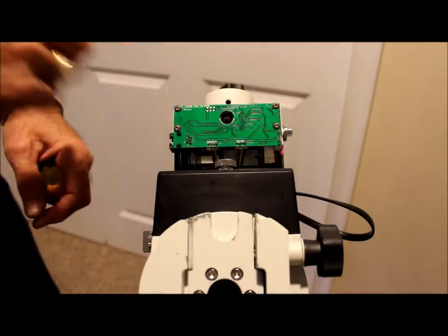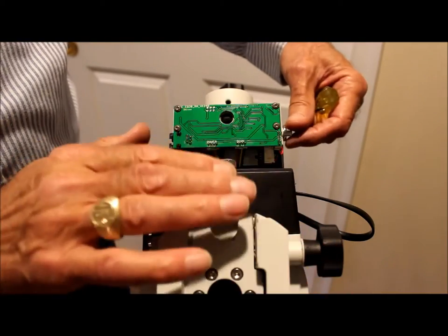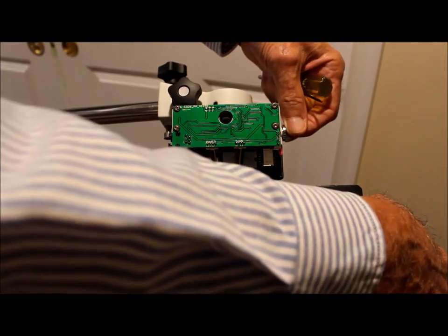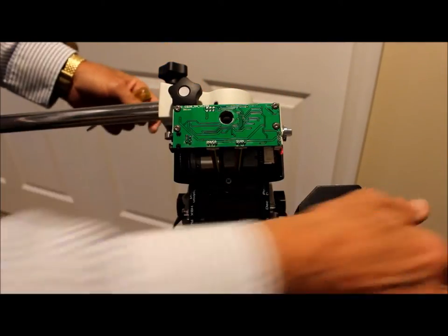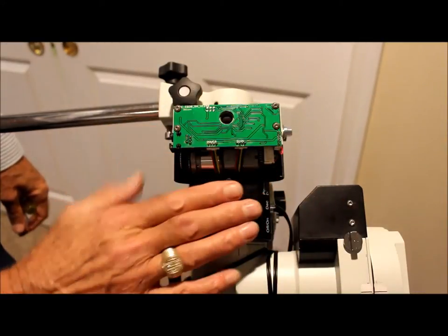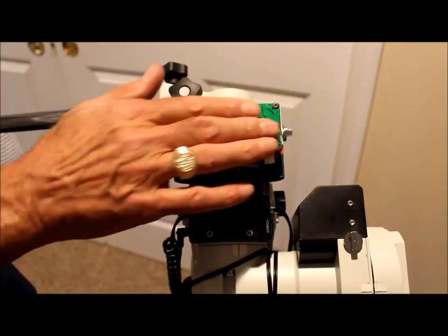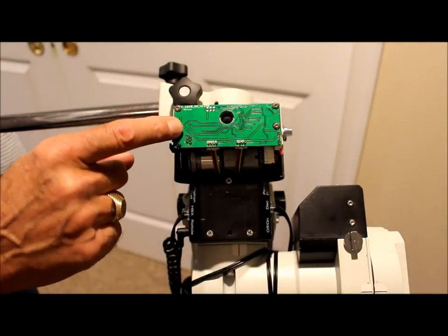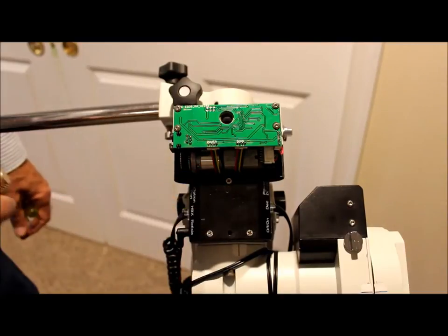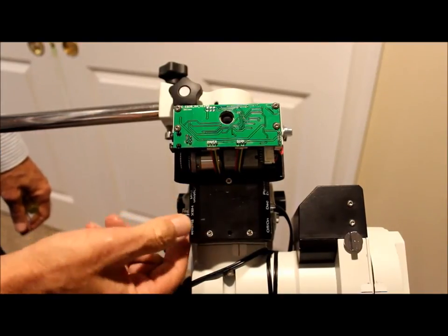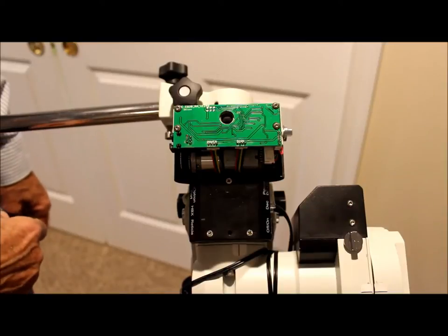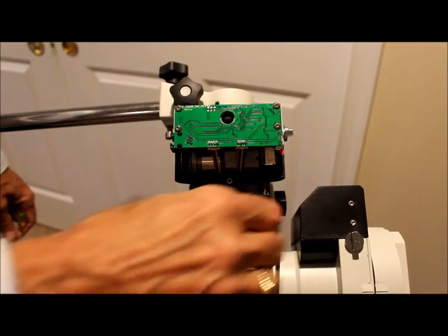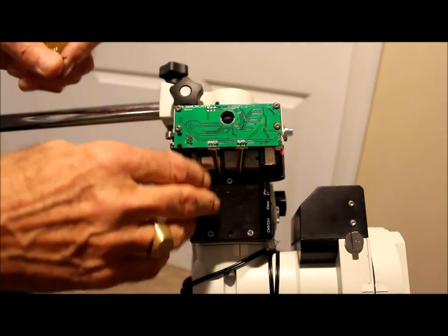Once we have that RA cover removed, we're going to cam this deck assembly out of the way by just flipping it over to either side. This will allow access to the main board cover and the RA main board right here. We're going to remove these four 2mm Allen head screws and these three Phillips screws. I'm going to disconnect my reticle, the hand box controller, and the deck cable to get those out of the way. So I'm going to remove these screws.